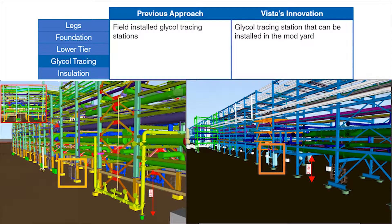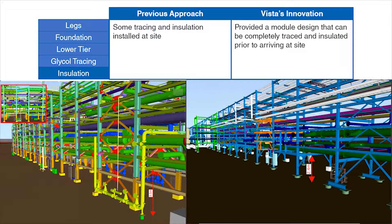Glycol tracing stations in the past have also been field-installed, creating a huge amount of work at site to hook these stations up. In Vista's designs, we have the tracing trees installed in the mod yard — insulation and tracing included. We include the tracing trees on the module, which allows us to fully insulate and deliver these modules fully tested to site, again saving time at site.